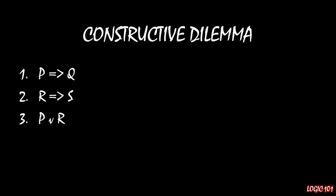The third premise is the disjunction between the antecedents of those two implications, so we have P or R. If we have all of that, then we can conclude that the disjunction between the second half of those two implications, Q or S, is true as well.